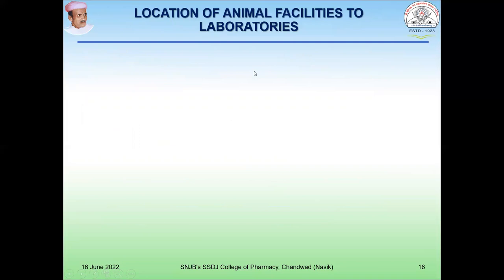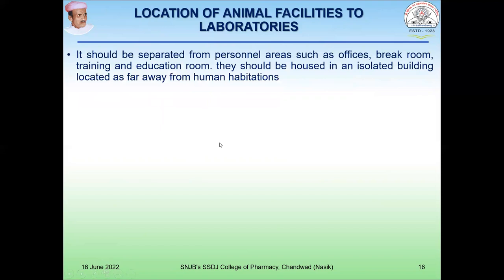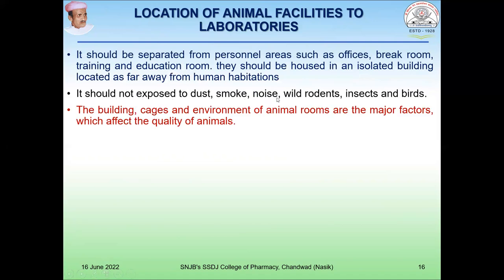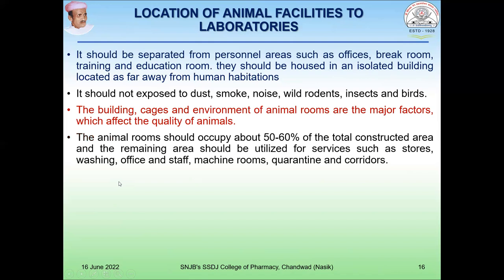The location of the laboratory animal facility is very important. The animal facility should be separated from personal areas such as offices, break rooms, training, and educational rooms. They should be housed in isolated buildings located as far away from human habitation as possible. The facility should not be exposed to dirt, smoke, noise, wild rodents, insects, and birds, as the building, cages, and environment of the animal room are major factors affecting the quality of animals. The animal rooms should occupy about 50 to 60% of total constructed area, and the remaining area should be utilized for services such as stores, washing, office and staff areas, machine room, quarantine, and corridors.